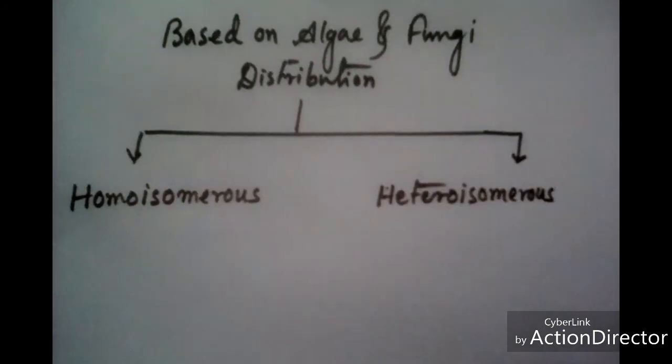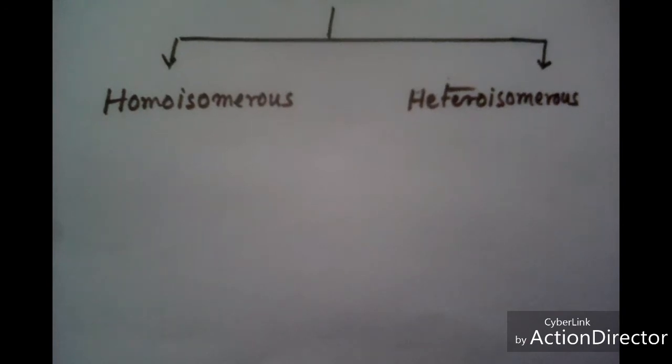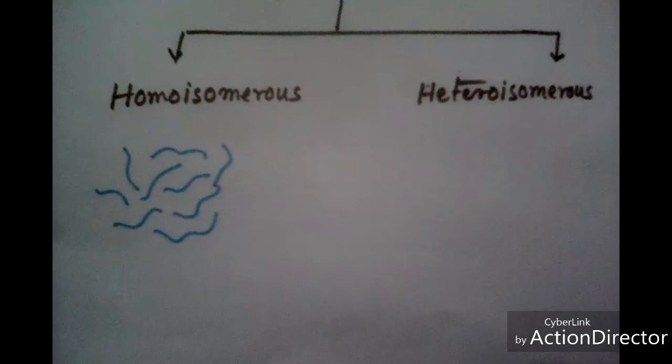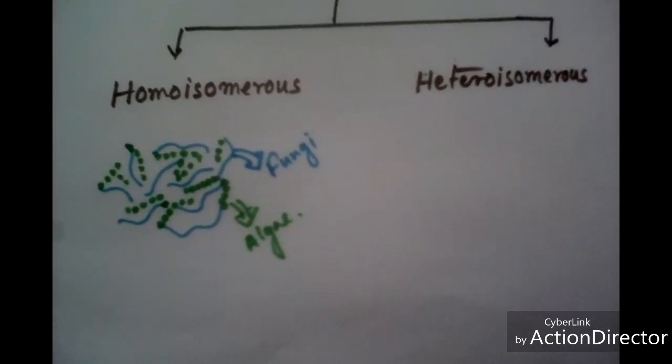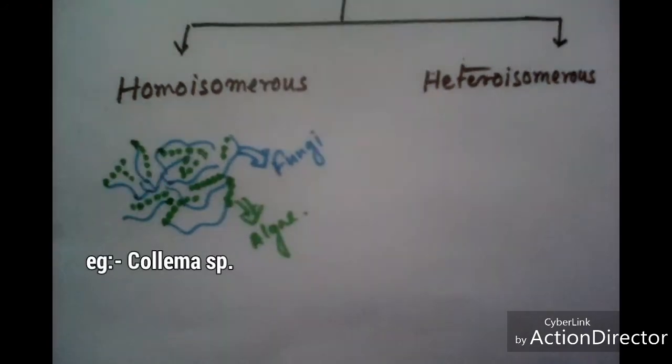In case of homoisomerous lichen, fungi and algae are equally distributed within a thallus, and the fungal hyphae are loosely intertwined with each other.